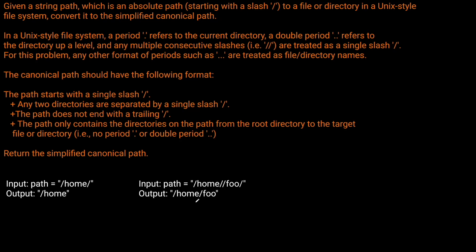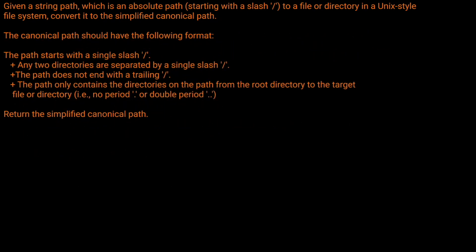We've read the question prompt and looked at examples. How are we actually going to solve this problem? The first thing to realize is that there are really only a few elements we can see in our path: a single slash, multiple consecutive slashes, a single dot, a double dot, or some sort of directory name. That's about it — we can't have anything else in our path.